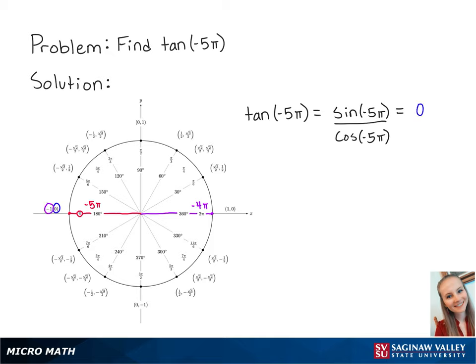Cosine correlates to the x-coordinate on the unit circle, so cosine of negative 5 pi is equal to negative 1.